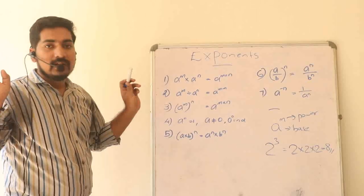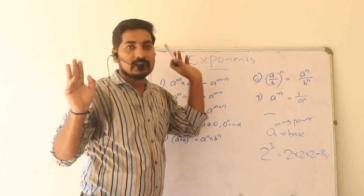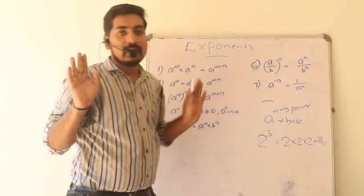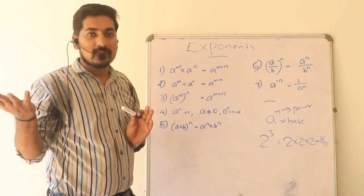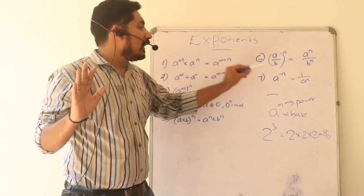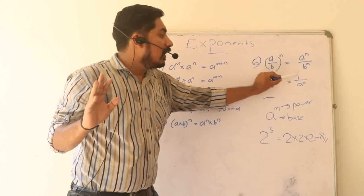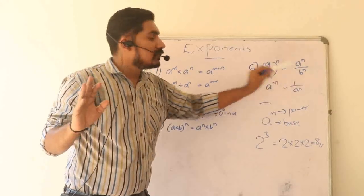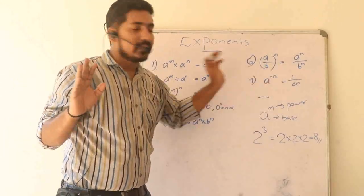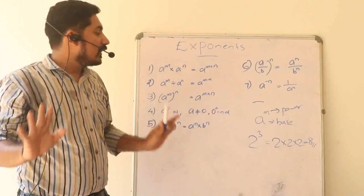Rule 5: a raised to n divided by b raised to n — that's why a by b, all raised to n, equals a raised to n divided by b raised to n. Also, a raised to minus n equals 1 divided by a raised to n.